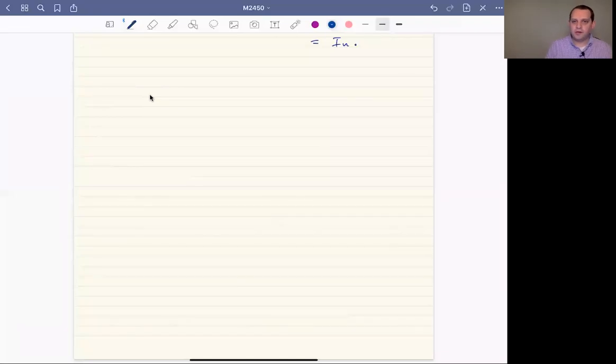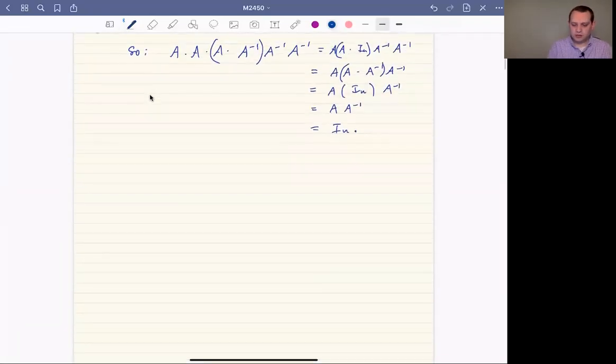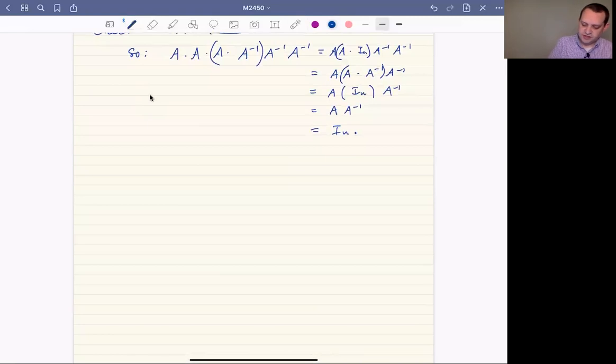One other property I want to talk about just to add to our discussion of inverses is, let's suppose A and B have inverses and let's just write them. Let's say that our inverses are A inverse and B inverse.